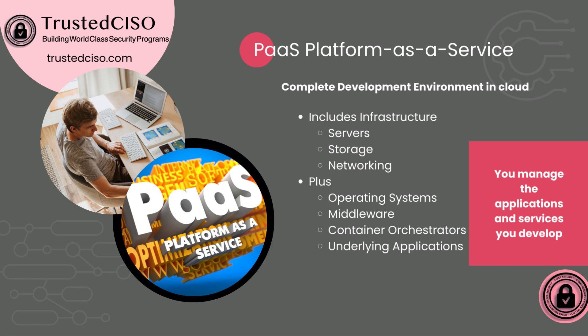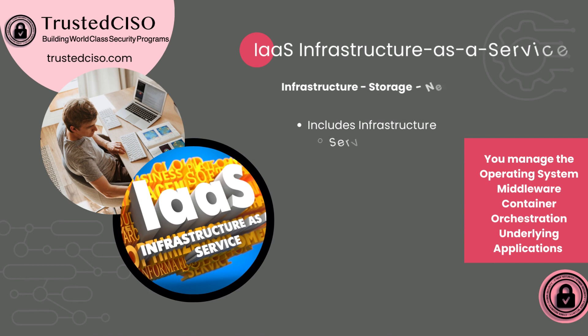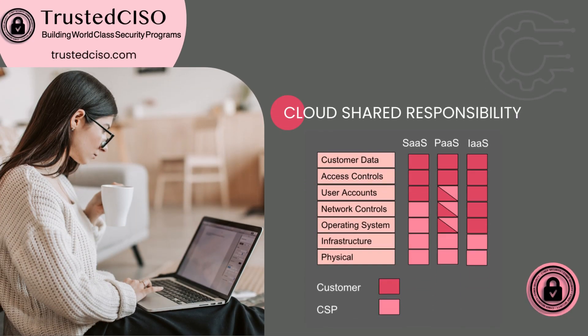With PaaS, all you have to do is manage the applications and services that you are developing. And then finally, there's infrastructure as a service. With IaaS, the most responsibility is on the customer. The infrastructure is managed for you — the server, storage, networking — but from the operating system up, you have to install your own operating system. So now it's your responsibility to patch that operating system, and to ensure that you have good backups, offline backups, and offsite backups.